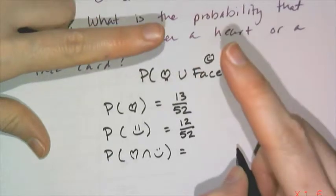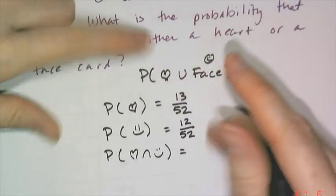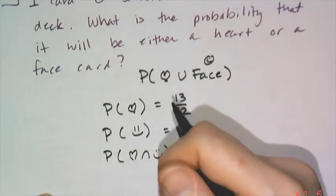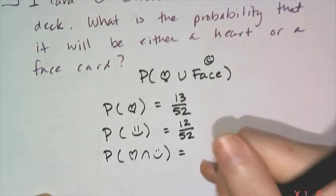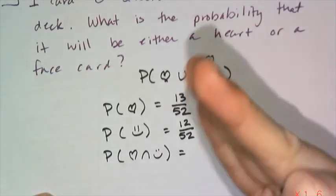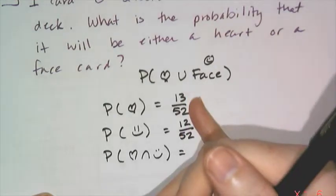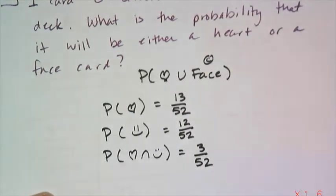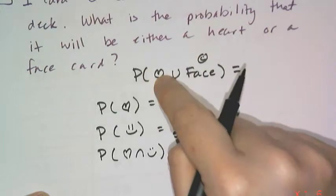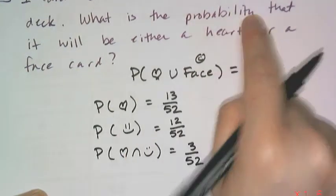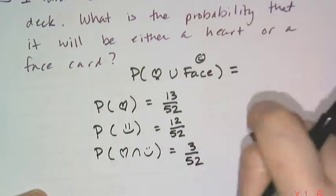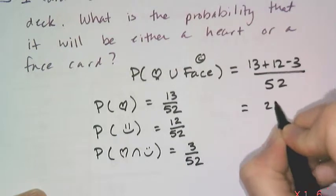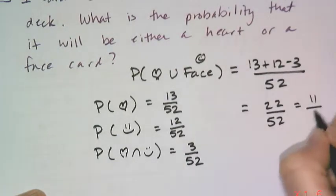But I know that those two sets are not disjoint, because there are face cards that are hearts, and I need to take that out. If I think about it, there's the King of Hearts, the Queen of Hearts, and the Jack of Hearts, which are counted in both of these. So I have to subtract one of those instances off. I need to have the 3 out of 52 taken away. So the probability that it's a heart or a face is going to be 13 plus 12 minus 3 over 52, which is 22 over 52, or 11/26.